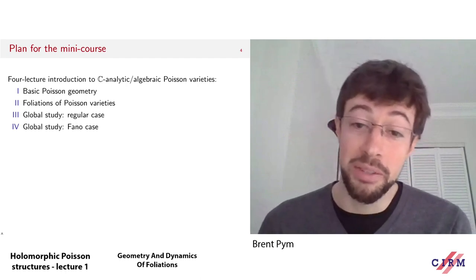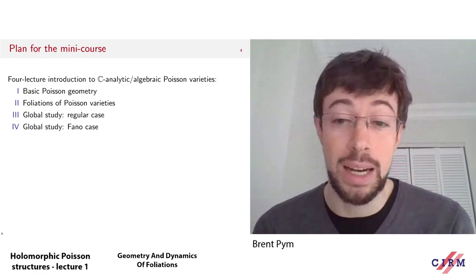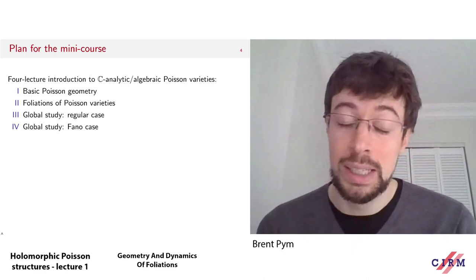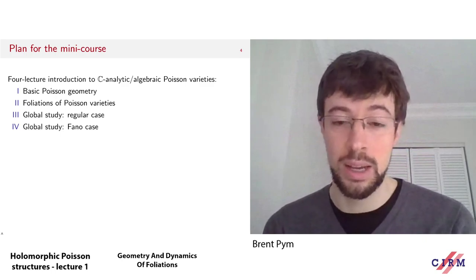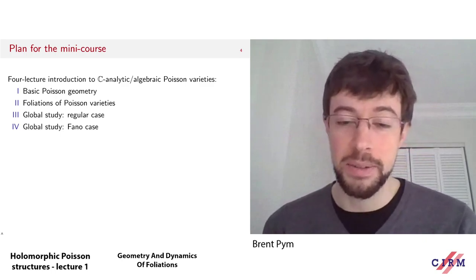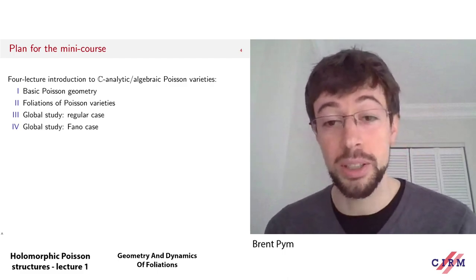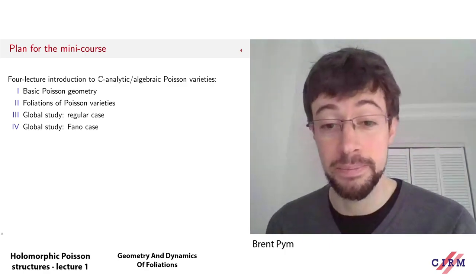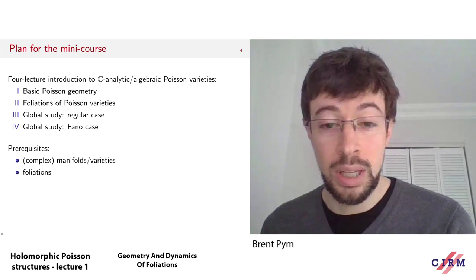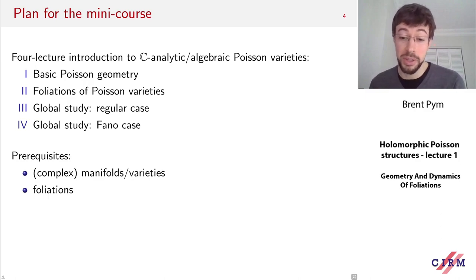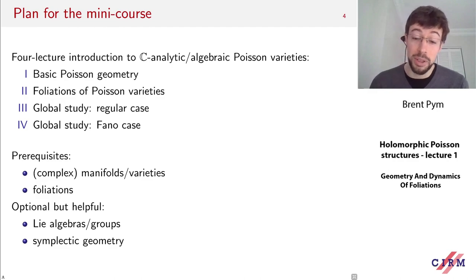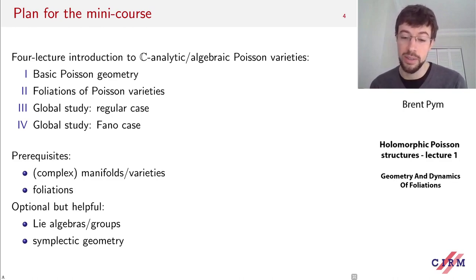The plan for the mini course is four lectures. I'm going to give a rough introduction to analytic and algebraic Poisson varieties over the complex numbers. The first lecture covers basic constructions in Poisson geometry; the second explains why foliations appear; and the third and fourth lectures discuss the global structure of these varieties. In terms of prerequisites, basic knowledge of complex manifolds and a little about foliations should be sufficient, and knowledge of Lie algebras, Lie groups, or symplectic geometry will help appreciate the structure and examples.